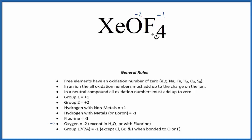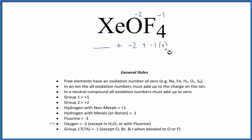Each of these fluorines has a minus one charge, so we can write this up like an equation. We don't know what xenon is, but we do know that we have a minus two for the oxygen and a minus one for each of the fluorines — and we have four fluorines. Since this is a neutral compound, we don't have a plus or minus, so all of that adds up to zero.